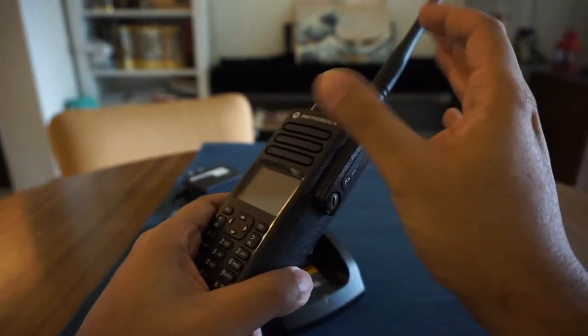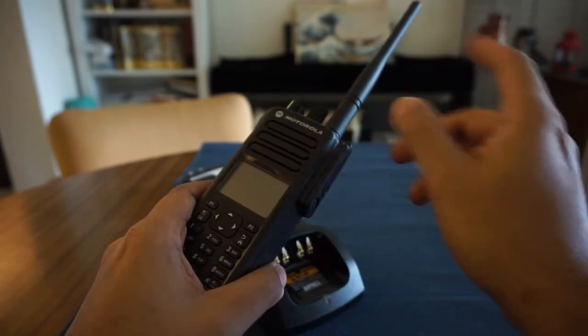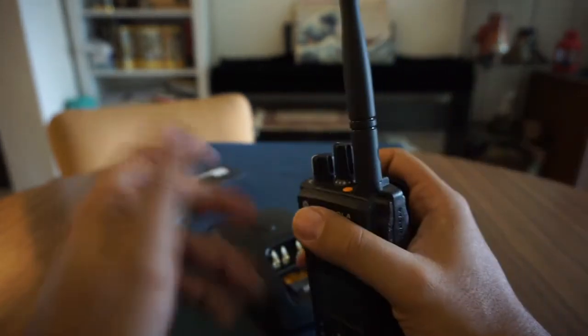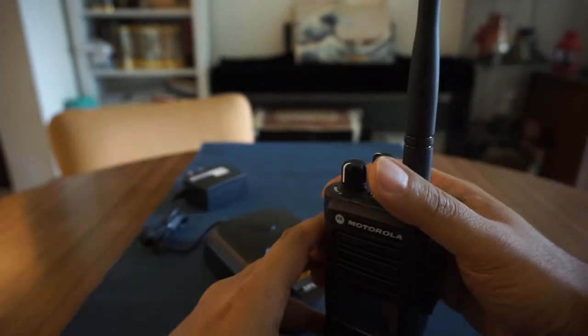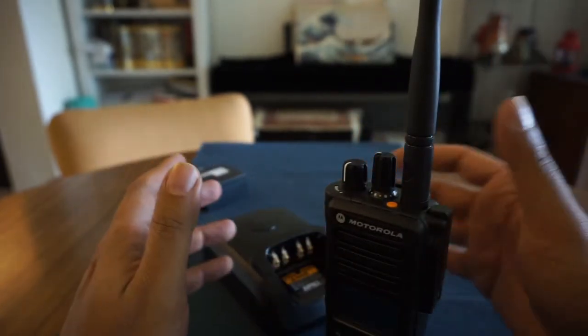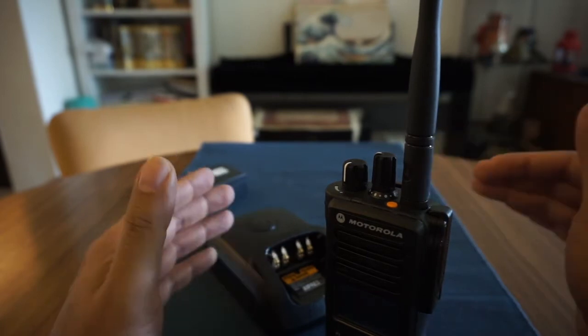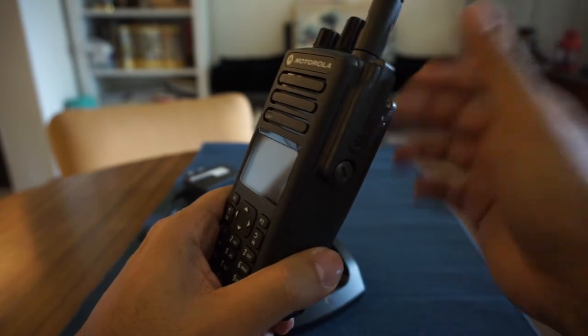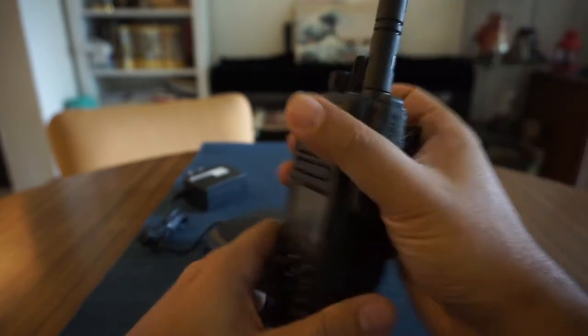But when you press that, if it like doesn't make a noise or if it says on here busy, it means like someone else is talking, so you gotta wait basically. So that's the key thing. Like if you hear other people talking, don't interrupt them unless it's an emergency. Let them talk and then make sure the line is clear. You can like press that to hear if the line is clear. If you get a beep, and then you can like actually press and start talking.